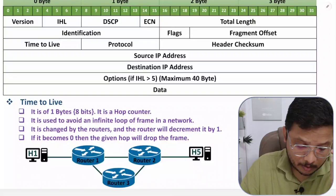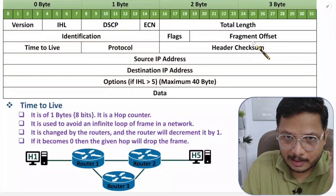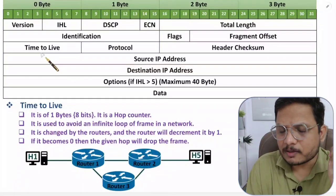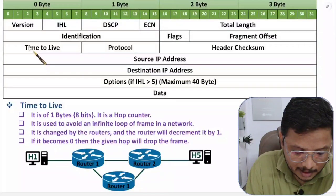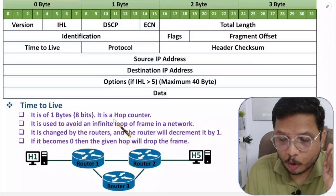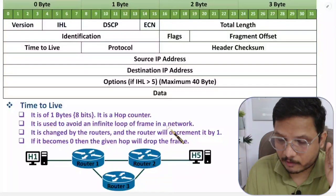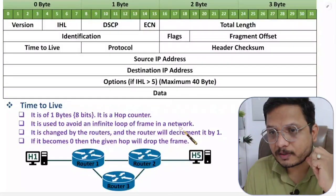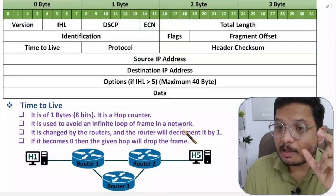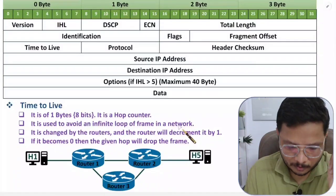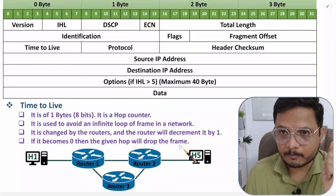Now let's discuss Time to Live (TTL), a very interesting field. TTL has a size of 1 byte (8 bits) and is a hop counter. We use this field to avoid infinite loops of frames in the network. It is changed by routers: each router decrements TTL by one. If TTL becomes zero, the router drops the frame.